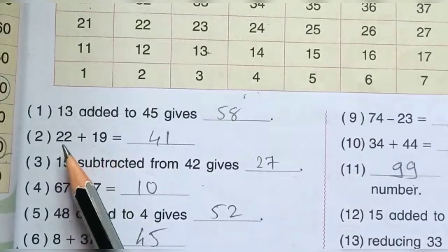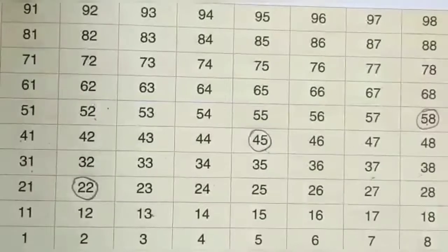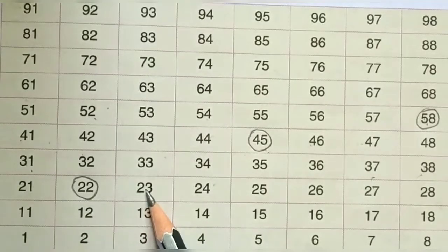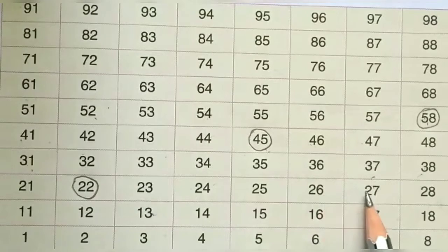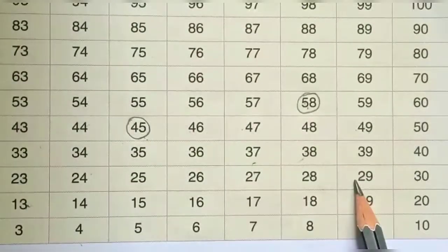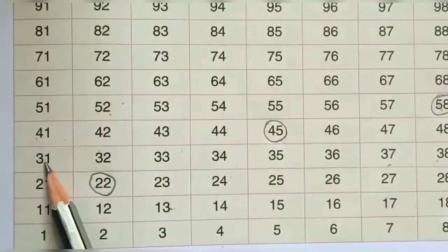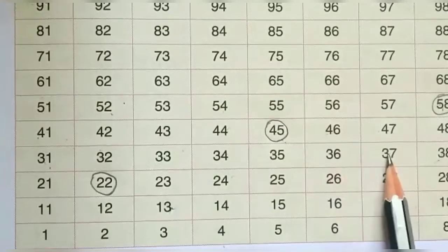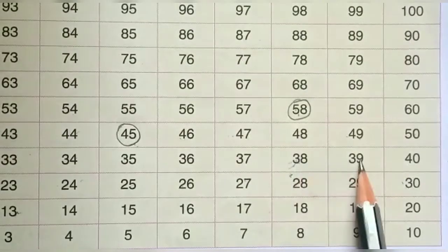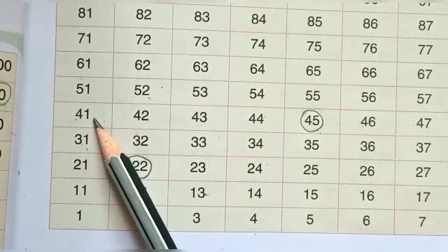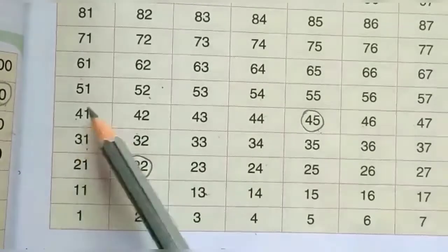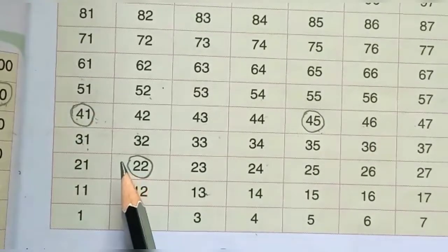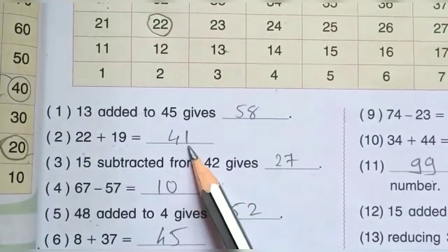Second one: 22 plus 19 — 22 में हम 19 add करेंगे. First of all 22 number circle, then count 19 steps forward. Counting 1 through 19 — lands on 41. 19 आता है तो circle, answer is 41. 22 plus 19 is equal to 41. Here write answer 41.